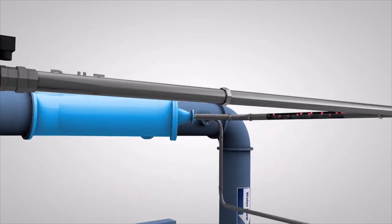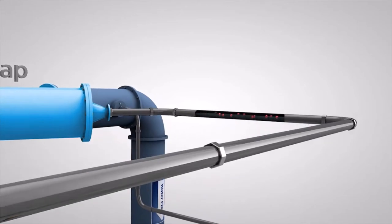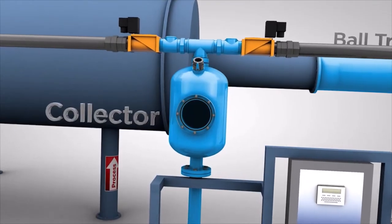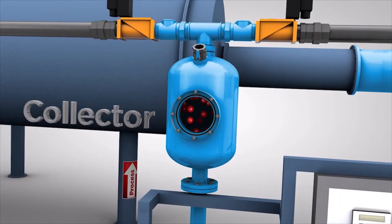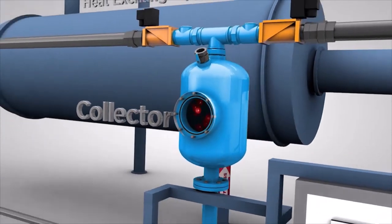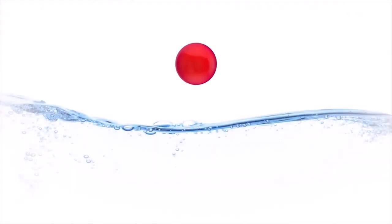Once the balls are in the trap, the controller opens the collection valves and the balls are carried back to the collector, where they are staged and prepared for the next injection cycle. It's amazing what one little ball can do.